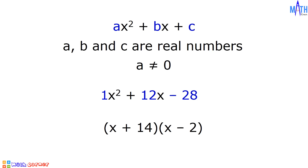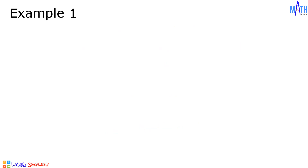Let us begin factoring general quadratic trinomials. Example number 1: let us factor x squared plus 10x plus 21.